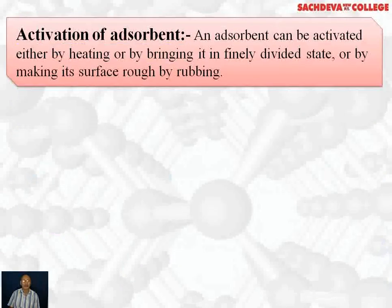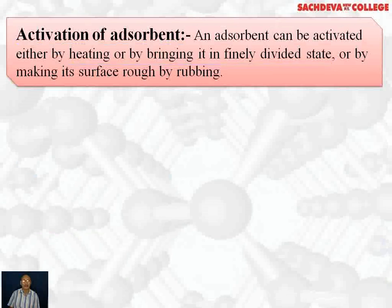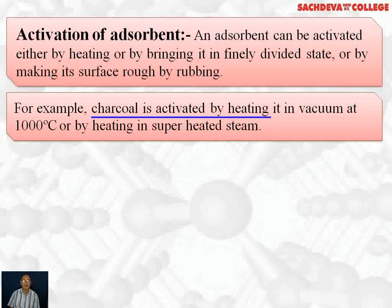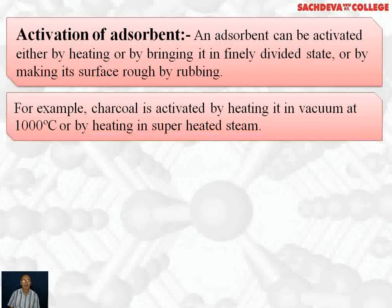Activation of adsorbent: an adsorbent can be activated either by heating, or by bringing it into a finely divided state, or by making its surface rough by rubbing. For example, charcoal is activated by heating it in a vacuum at 1000 degrees centigrade, or by heating in superheated steam.